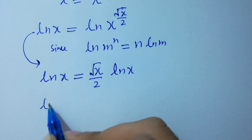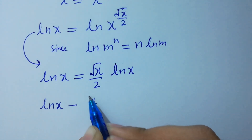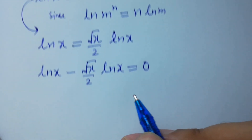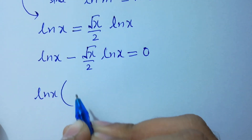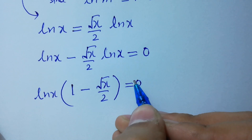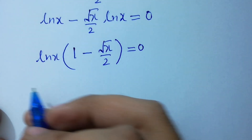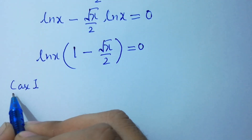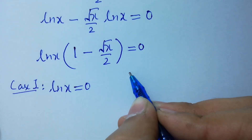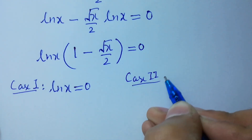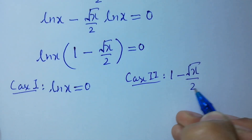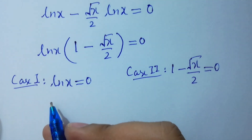ln x minus square root of x over 2 times ln x equals 0. This is the same as ln x times (1 minus square root of x over 2) equals 0. So we have two cases. Case 1 is ln x equals 0, and Case 2 is 1 minus square root of x over 2 equals 0.